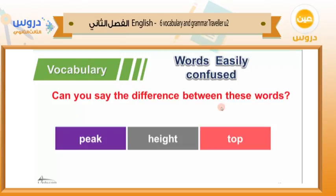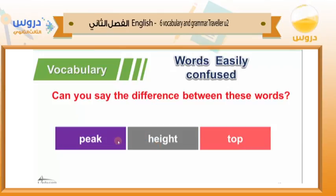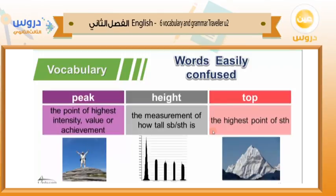The second set of confusing words is peak, height, and top. The word 'peak,' which is a noun, means the point of highest intensity — it could be value or achievement. So it could be some kind of intensity, a value, or an achievement. This is the peak of something — peak hour, and so on.